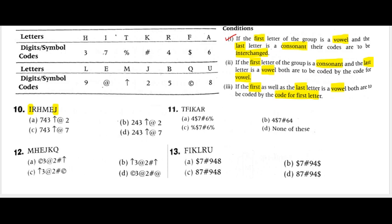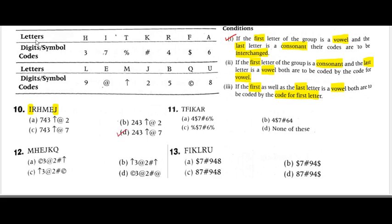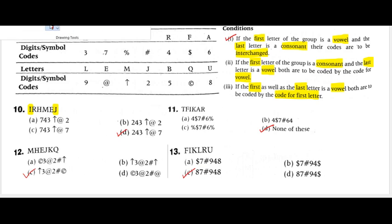Let's see if we get the answers without my help. The 10th answer is D, the 11th is D, the 12th — and the 13th is BC. Because in the 13th, the second condition applies — the first letter is a consonant and the end is a vowel, so both are coded by the code of the vowel. The vowel's code is 8, so 8 applies to both.